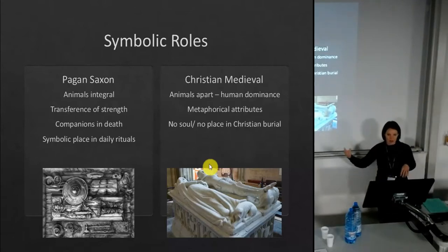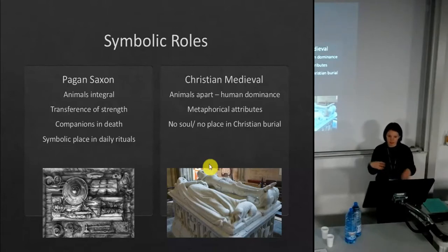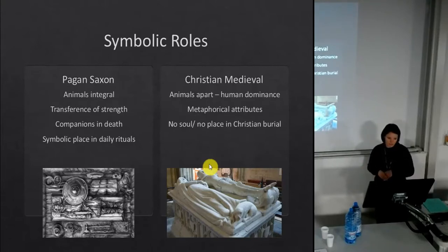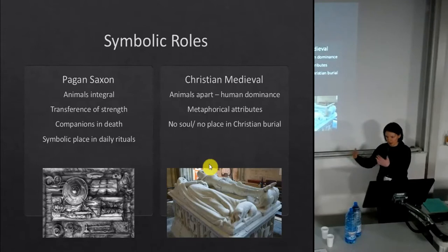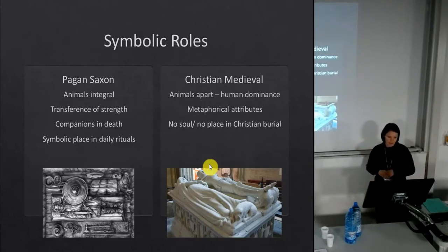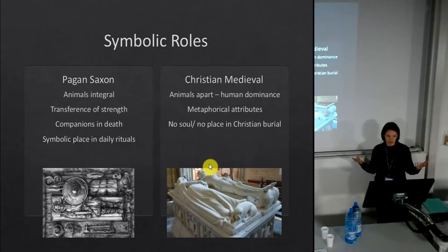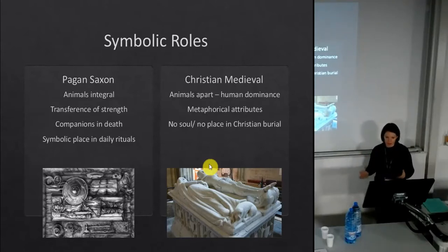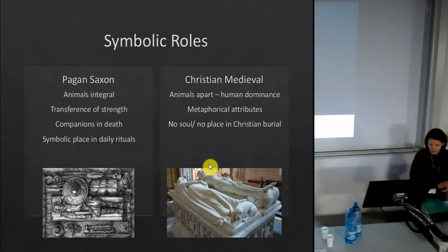So contrasting these symbolic roles, we see a large change socially and within religion between the pagan Saxon and Christian medieval periods. Animals change from having an integral role in the symbolic lives of people to being thought of as lower than humans, with no place as equals. Instead of transferring strength from animal to person, or being a suitable companion in death, or having a symbolic place in daily rituals — they have no soul, no place in the everyday spiritual life of people.